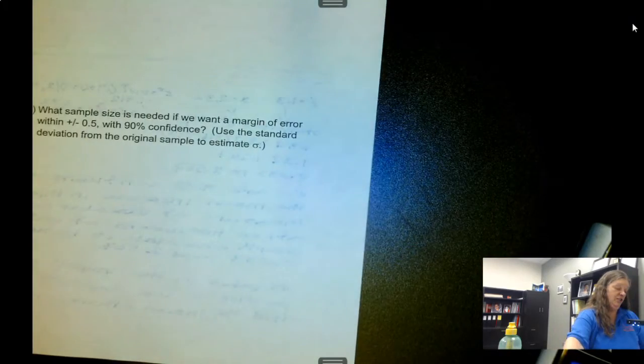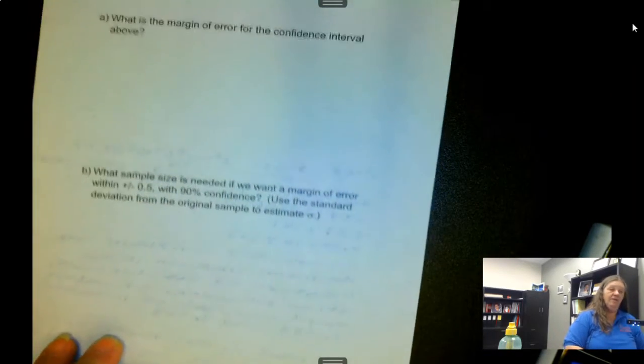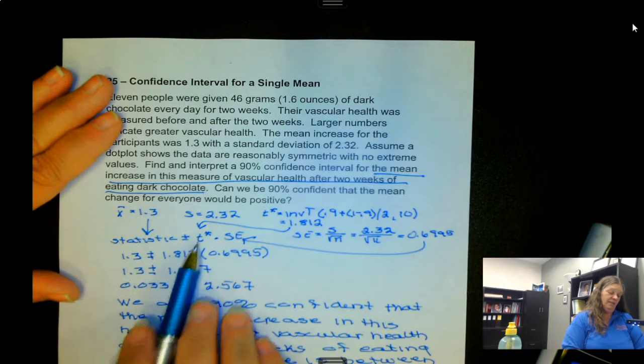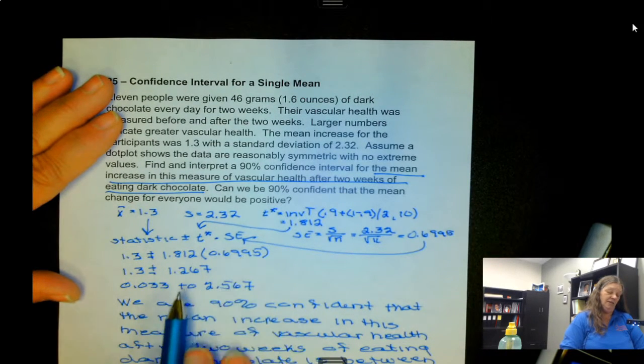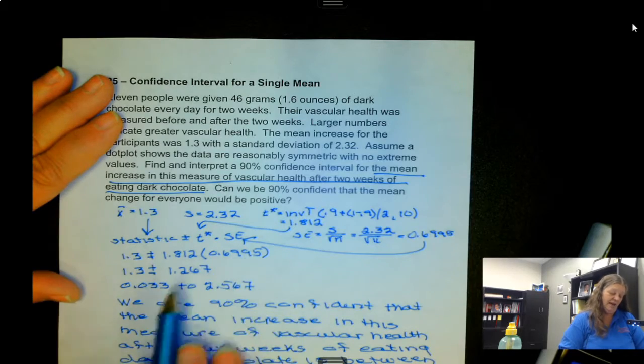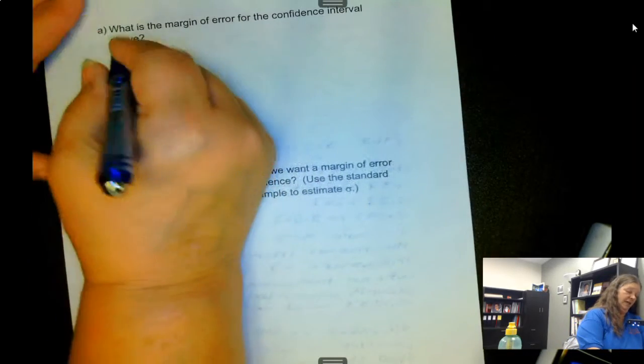Now we have some more questions. What is the margin of error for the confidence interval above? Well, remember the margin of error is the T-splat times the standard error, so it would be 1.267.